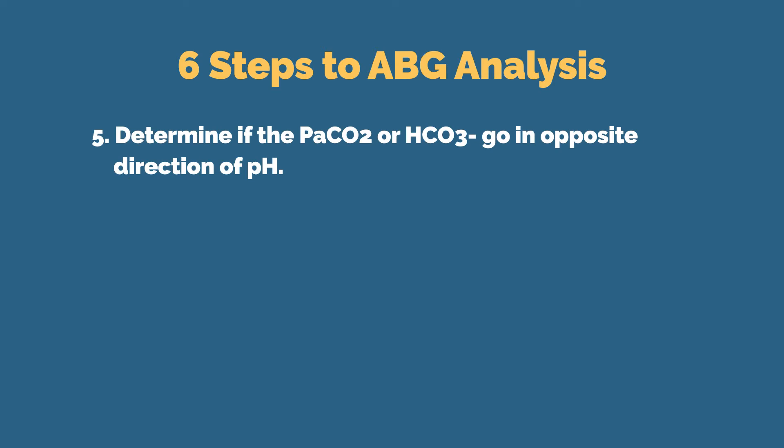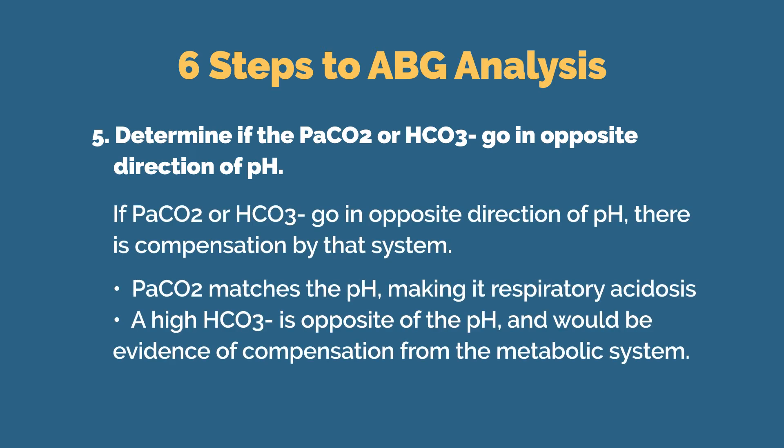For step five, we need to determine if compensation has occurred. Here we want to look at the value that we have not matched up with the pH and see if it has moved outside of normal range in the opposite direction of the pH to indicate compensation. For example, if we've concluded that CO2 is high and labeled as acidic, matching the low pH — giving us a respiratory acidosis — we now look at the bicarbonate level to see if this system has started to compensate. If we note a normal bicarbonate level, it indicates that no compensation has occurred, and we would call that uncompensated.